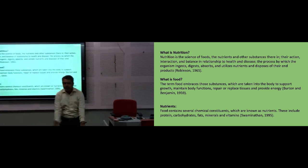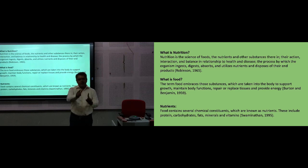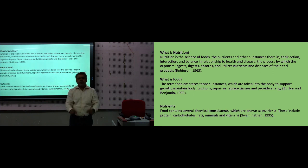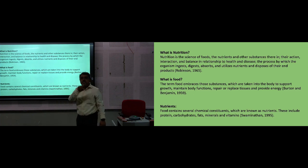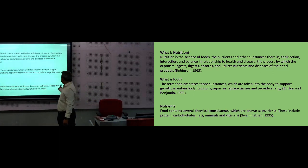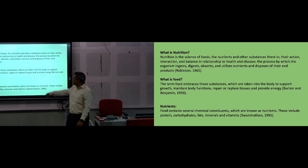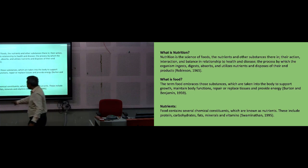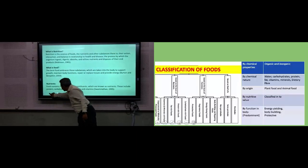Every food has a different nutrient composition. Any food is made up of six elements: first, water or moisture percent; then total carbohydrate, total protein, total fat, ash percent, and food fiber. These are the six elements. Food contains several constituents known as nutrients. These include protein, carbohydrate, fat, minerals, and vitamins — that definition given by the formula.